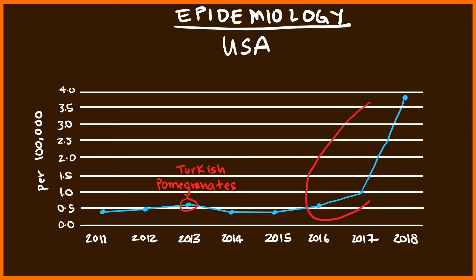After 2016, there is a sharp rise — from less than 0.5 per 100,000 in 2015 to greater than 4 per 100,000 in 2018. This is largely attributed to many social factors in the United States: increased homelessness, the increase in IV drug use that became rampant, and also men having sex with men. In many ways, the incidence of Hepatitis A virus is an indicator of the social problems the United States is dealing with.